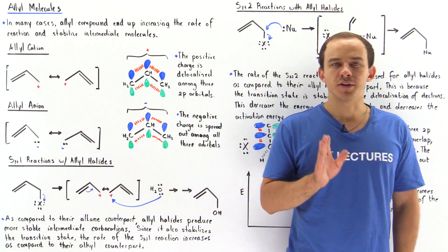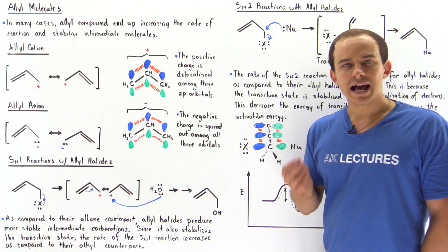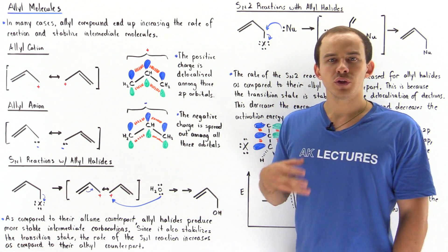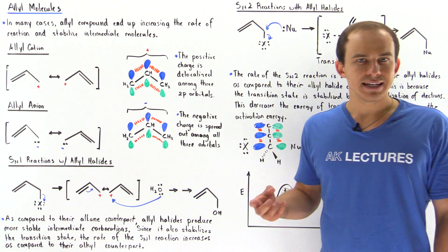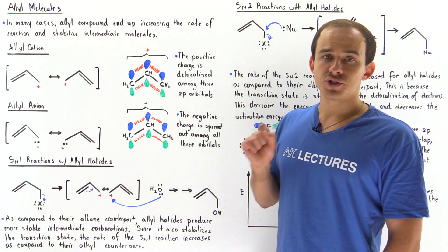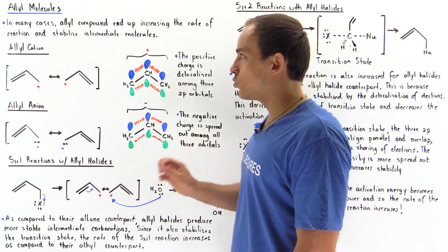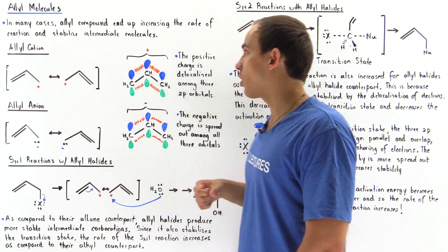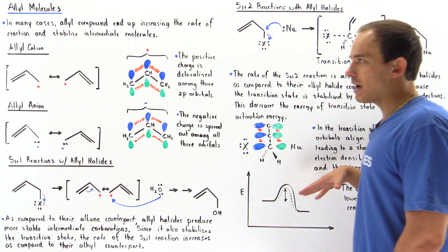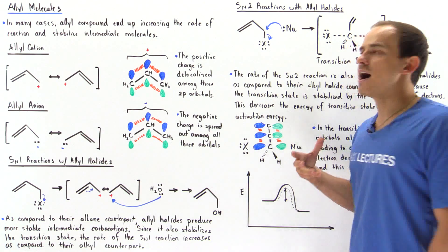In this lecture, we're going to briefly discuss a group in organic chemistry known as the allyl group. Allyl compounds usually stabilize intermediates in different types of reactions, and they also stabilize the transition states. As a result, allyl compounds, as compared to their alkyl counterparts, end up increasing the rate of reaction. Let's begin by discussing what the allyl cation and the allyl anion are.